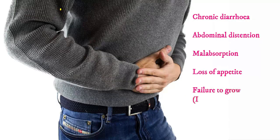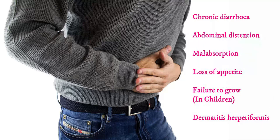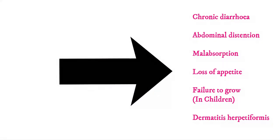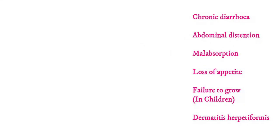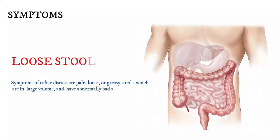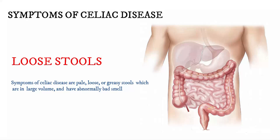Presentation of Celiac disease includes chronic diarrhea, abdominal distention, malabsorption, loss of appetite, and in children, failure to grow. Other features include dermatitis herpetiformis. The typical stool symptoms are pale, loose, or greasy stools which are large in volume and have an abnormally bad smell.